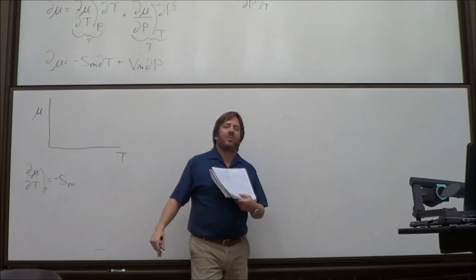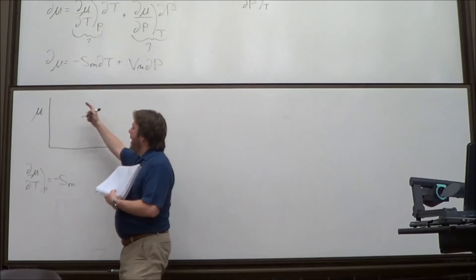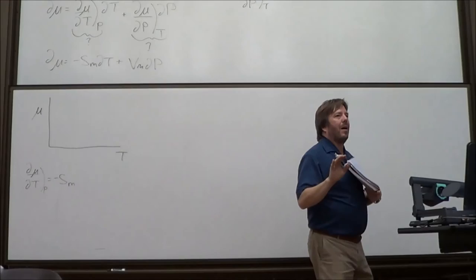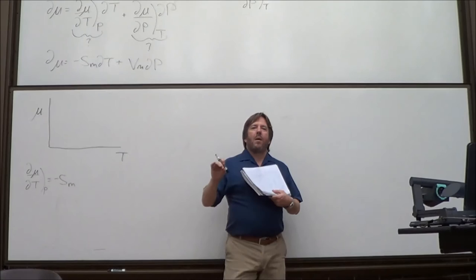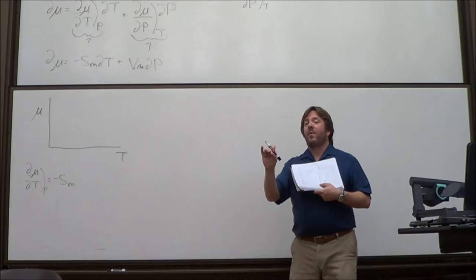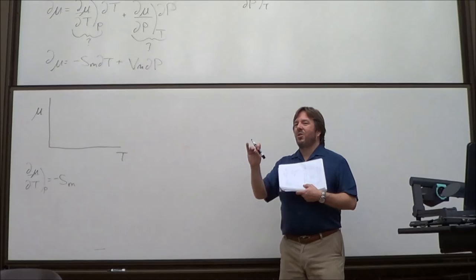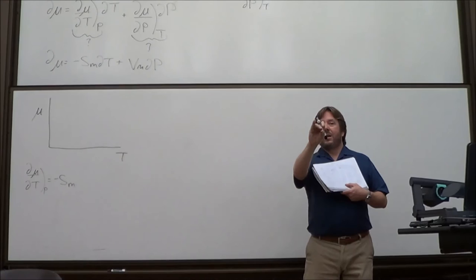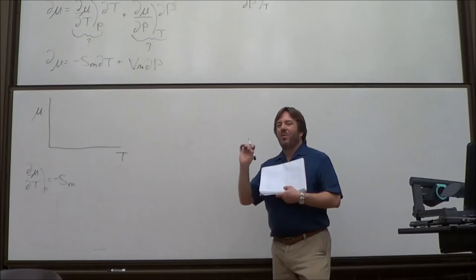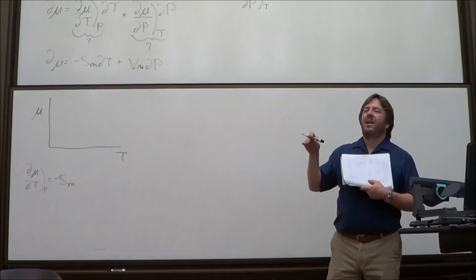The chemical potential of the dominant phase is always the lowest, because energy goes downhill. At low temperatures, the solid dominates, so the solid's chemical potential must start low. The liquid must undercut the solid at higher temperatures, so it needs a steeper negative slope. Liquid has more entropy than a perfect crystal solid (by the third law, a perfect crystal at zero Kelvin has zero entropy), so the liquid line is indeed steeper.